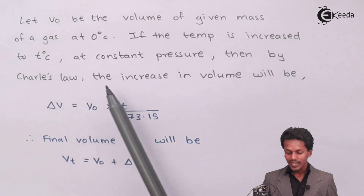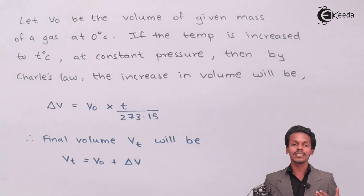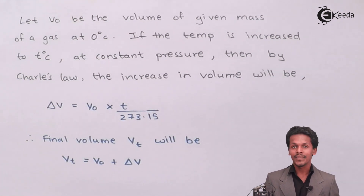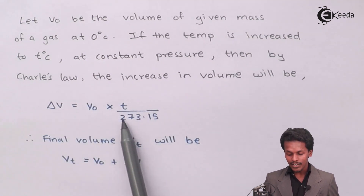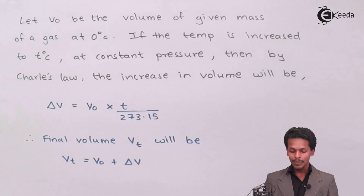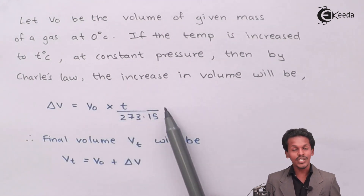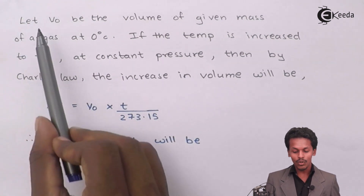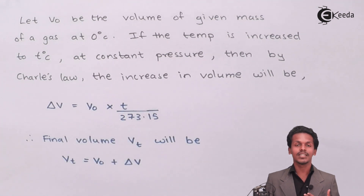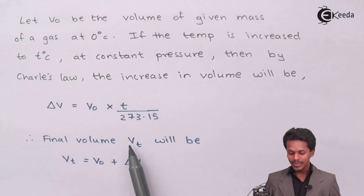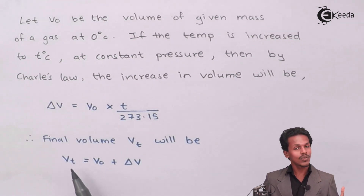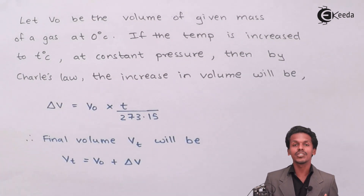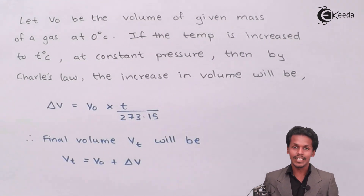then according to Charles's Law, the increase in volume — that is delta V, the change in volume — will be V0 × T / 273.15, where T is the temperature in degrees Celsius that we have increased to. So the final volume VT will be VT = V0 + delta V, that is V0 plus the change in volume after increasing the temperature from 0°C to T°C.